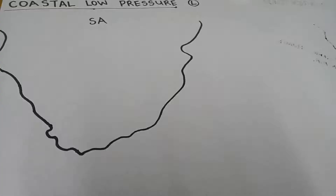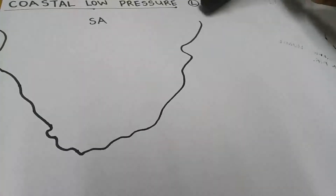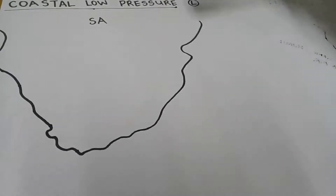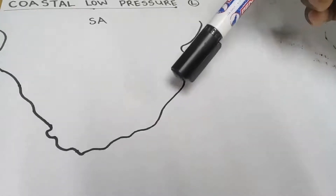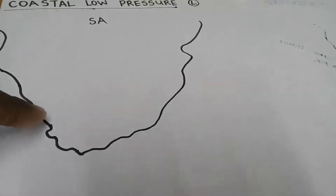Hello matriculants, students who are redoing their matric, geography teachers, and people who are curious about learning geography. Today we're going to be discussing a coastal low pressure. As you can see, you're also familiar with this L inside the circle. This is the coastal low pressure. If you see this L on a typical weather map along the coastal area, you should know it's a coastal low pressure.